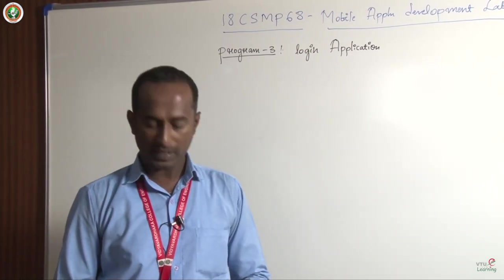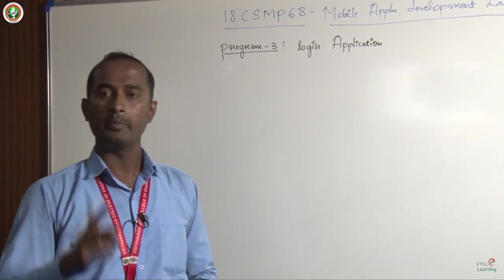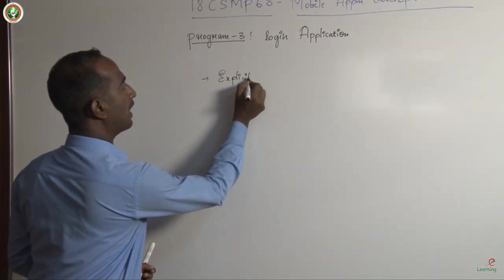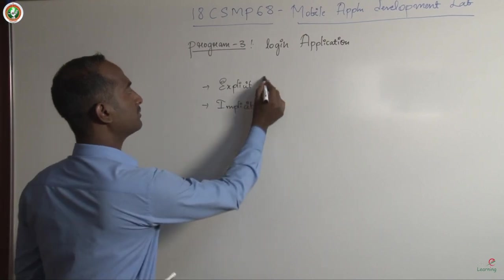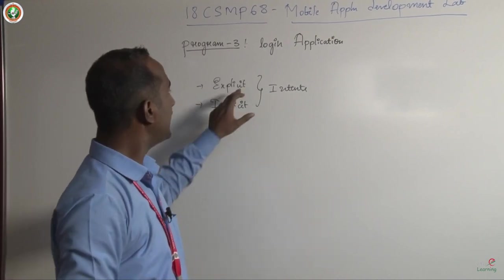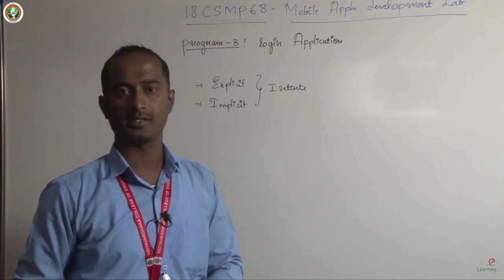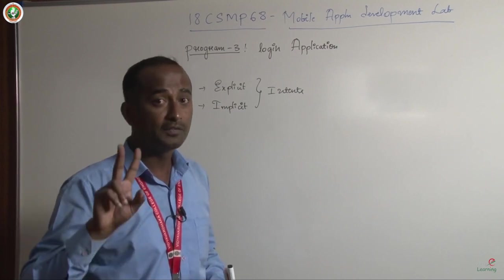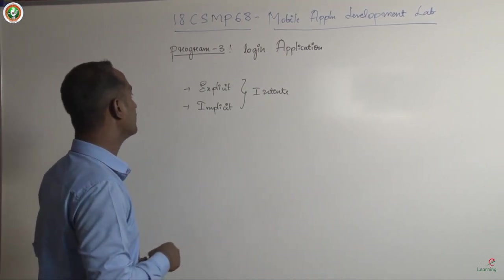Before I start with this login application, you must know about intents. I have explained intents in my first video. We are going to make use of two types of intents: one is explicit, and the other one is implicit. Explicit means the transition is happening between two activities — such intents are called explicit intents.